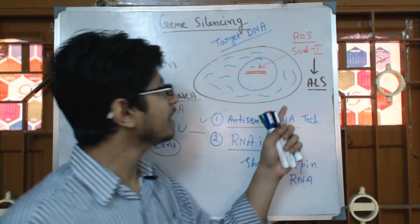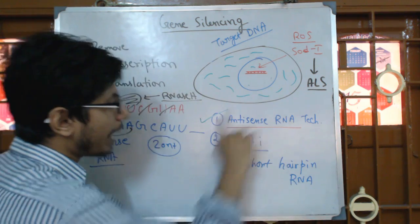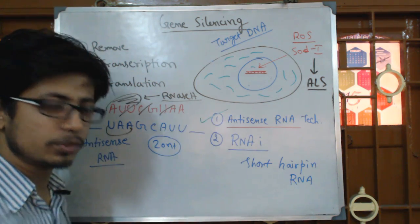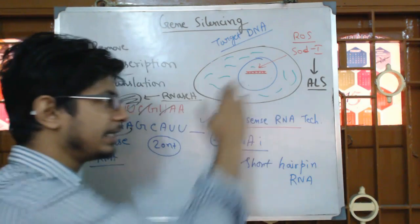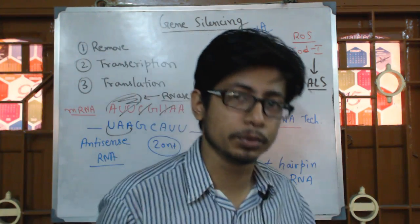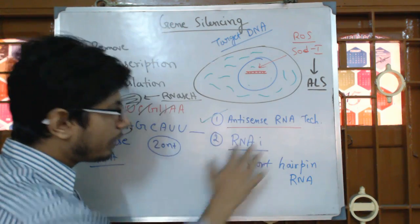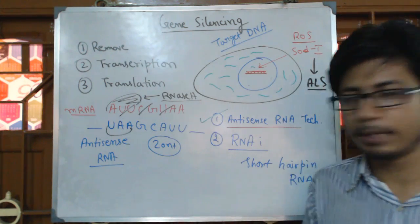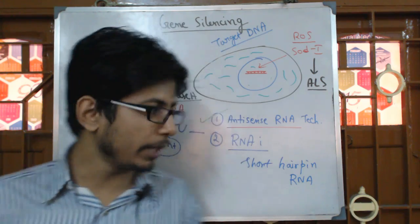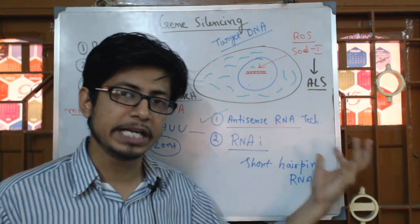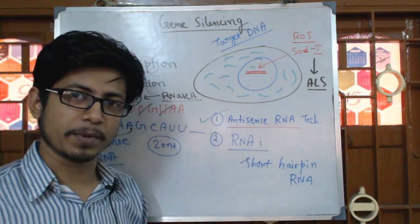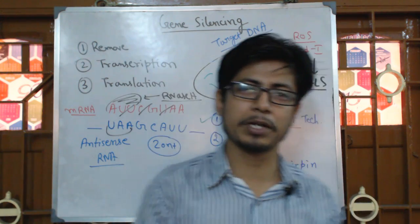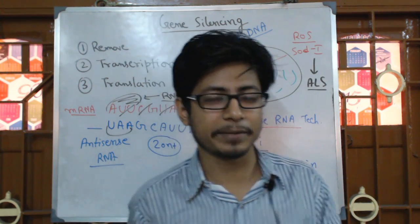Antisense RNA can be easily injected from outside and can do its job simply by binding to the target mRNA. The prevention by antisense RNA technology is to block the synthesis of protein from mRNA. We are not targeting the DNA or gene directly — we are targeting the mRNA produced by that gene. The challenge with this approach is that there will be many copies of mRNA produced from the specific gene, so we need to deliver a very high concentration of antisense RNA inside the cell.